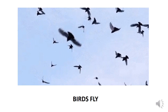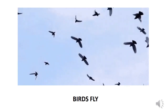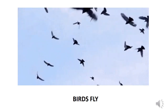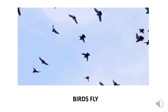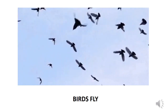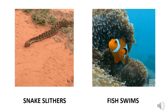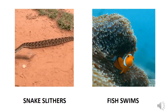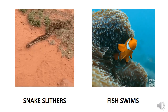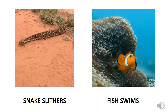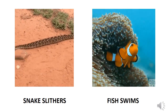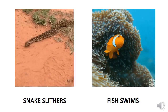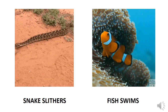You all know how birds move — birds fly in the sky with the help of wings. Now we have a picture of a slithering snake and a swimming fish. Snakes slither on the land; they do not have any legs. Fish swims in the water. Fish have fins which help them to swim easily.